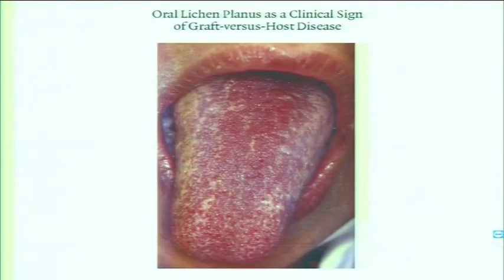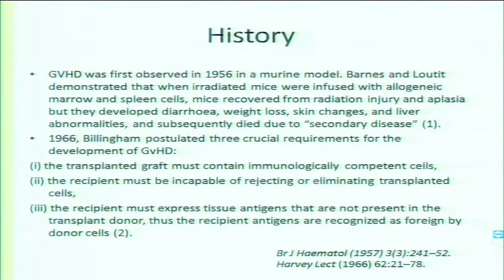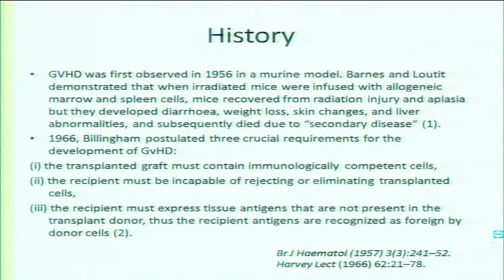Graft-versus-host disease can look like lichen planus, which is a manifestation of chronic GVHD. GVHD was first observed in 1956 by Barnes and Lothite. They were doing irradiation experiments in mice, taking spleen from a littermate and putting it into a totally irradiated mouse. After a few weeks, the mouse started losing hair, developing diarrhea, and losing weight. They called this 'secondary disease,' and it is known as Runt disease in the mouse.